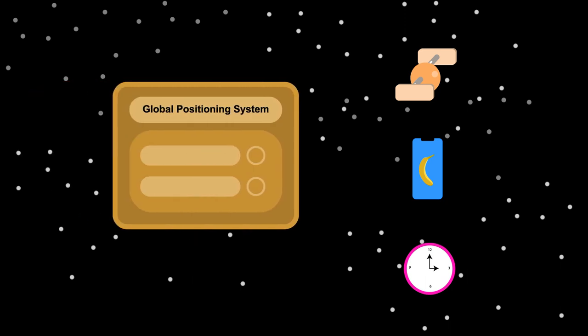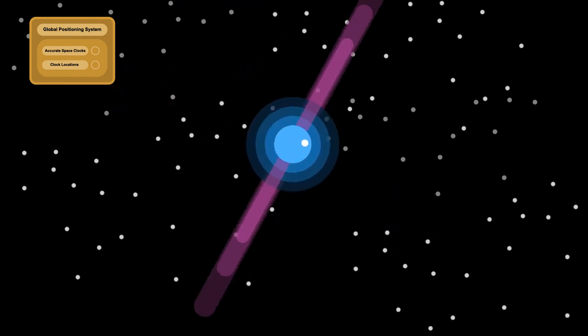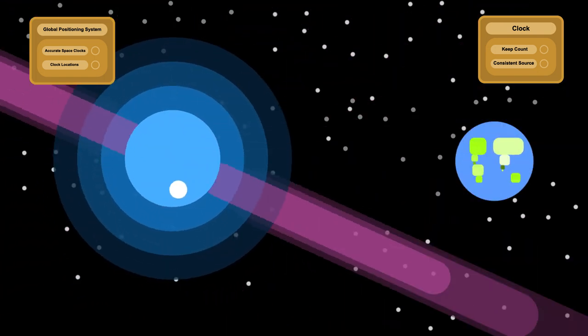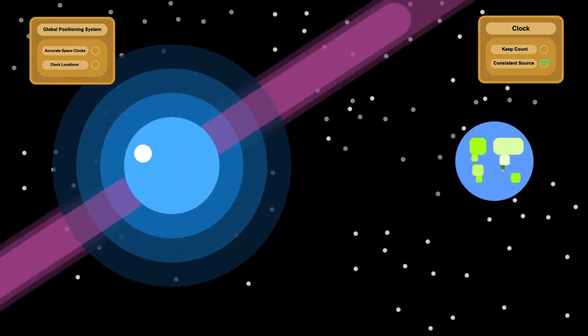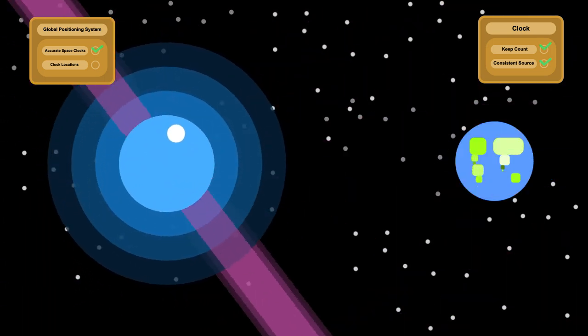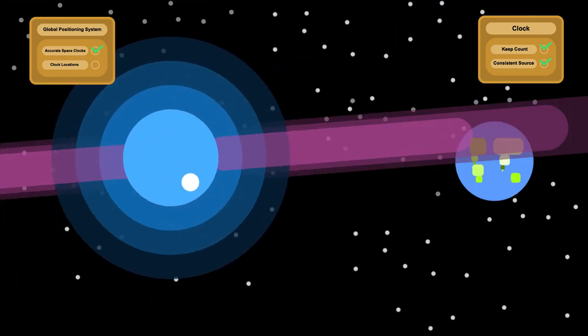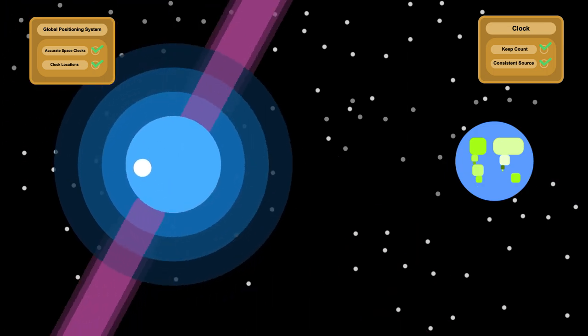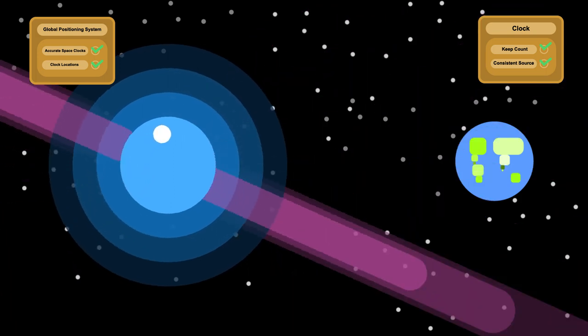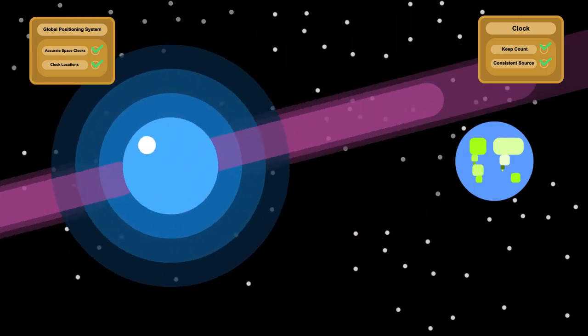In essence, the Global Positioning System is a collection of accurate clocks in space whose location we know of at all times, which is why we may not need the satellites anymore. There are dead stars in space called pulsars that shoot out jets of energy and rotate extremely fast. From Earth, they look like an extremely consistent source of blinking light. If we can devise a way to count the number of blinks, we have a clock. And thanks to the hard work of scientists and engineers, we know exactly where they are relative to the center of the Earth. The concept has already been proven. Can we actually turn it into a system for everyone to use? I don't know. Only time will tell.